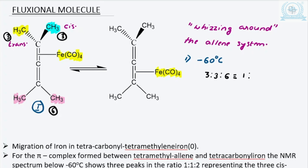Therefore at low temperature, due to three non-equivalent protons, we get a total of three peaks: one due to the cis protons, one due to the trans protons, and one due to the hydrogen atoms lying in a plane perpendicular to the carbon–iron bond.